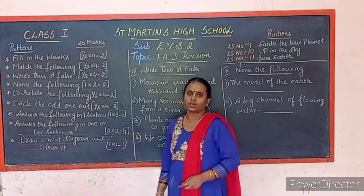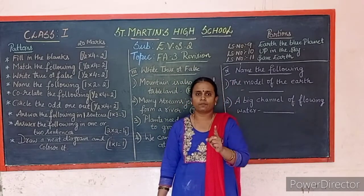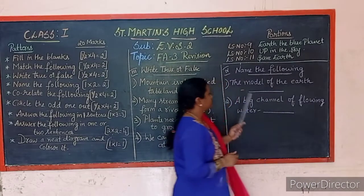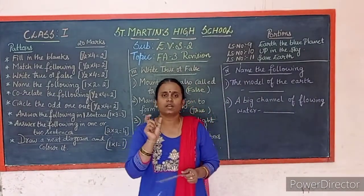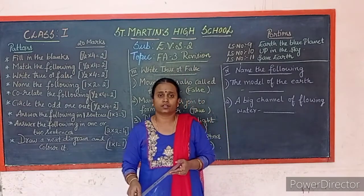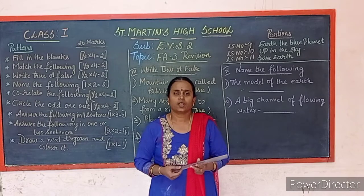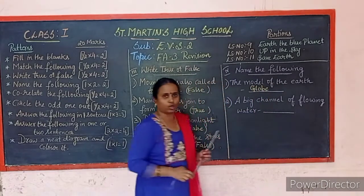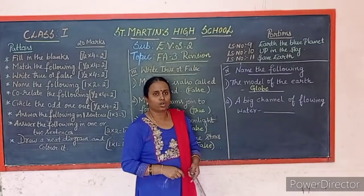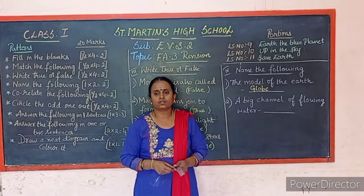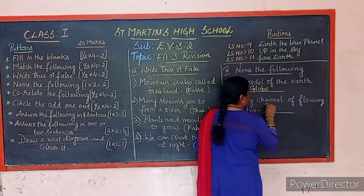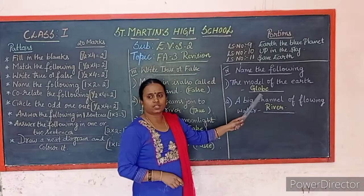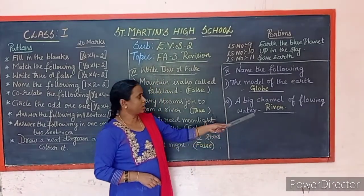Name the following: there will be 2 questions, each carrying 1 mark, answered in one word. 'The model of the earth' — the answer is Globe (G-L-O-B-E). 'A big channel of flowing water' — the answer is River (R-I-V-E-R).